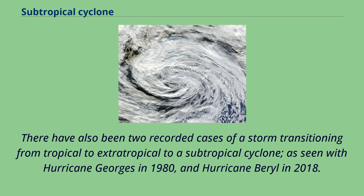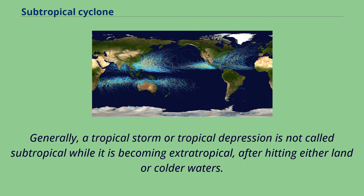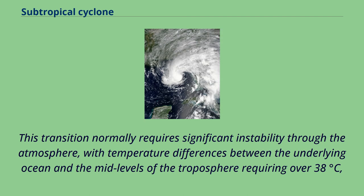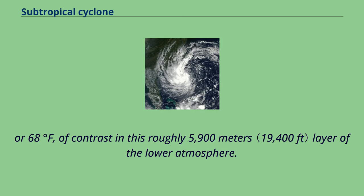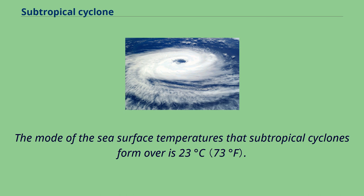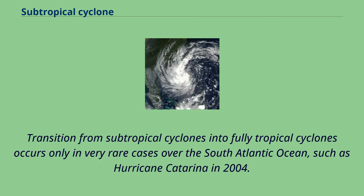There have also been two recorded cases of a storm transitioning from tropical to extratropical to subtropical cyclone, as seen with Hurricane Georges in 1980 and Hurricane Beryl in 2018. Generally, a tropical storm or tropical depression is not called subtropical while it is becoming extratropical after hitting either land or colder waters. This transition normally requires significant instability through the atmosphere, with temperature differences between the underlying ocean and the mid-levels of the troposphere requiring over 38 degrees Celsius (68 degrees Fahrenheit) of contrast in this roughly 5,900-meter layer of the lower atmosphere. The mode of sea surface temperatures that subtropical cyclones form over is 23 degrees Celsius. Transition from subtropical cyclones into fully tropical cyclones occurs only in very rare cases over the South Atlantic Ocean, such as Hurricane Catarina in 2004.